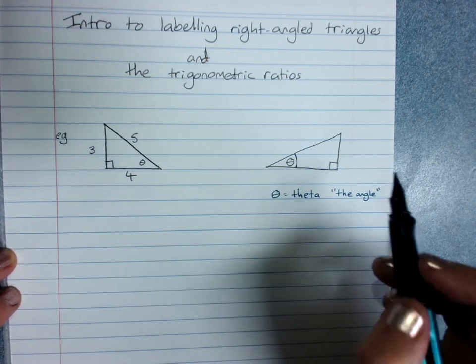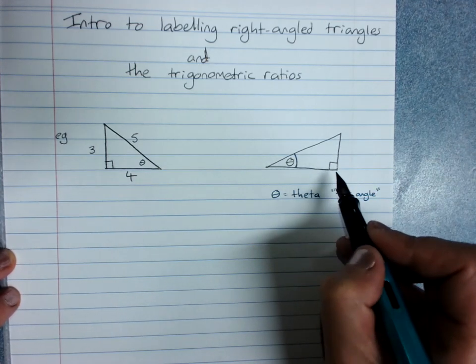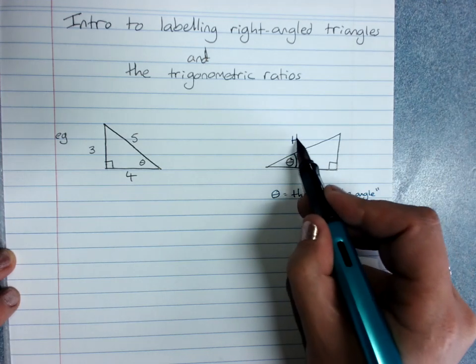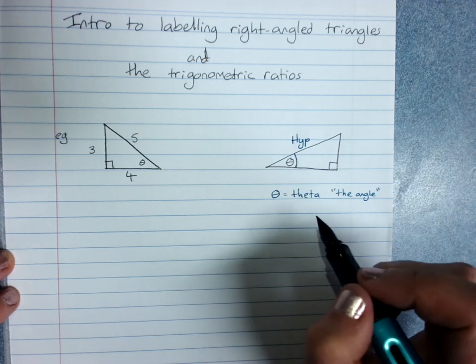Now, we can already label the hypotenuse because that is always the longest side opposite the right angle. But we do need to also be able to label the shorter sides.